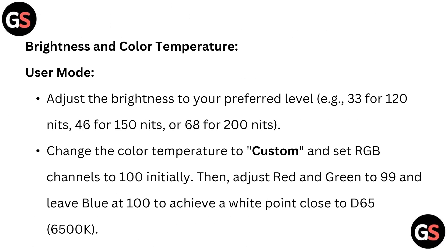In User Mode, adjust the brightness to your preferred level — for example, 33 for 120 nits, 46 for 150 nits, or 68 for 200 nits. Change the Color Temperature to Custom and set the RGB channels to 100 initially, then adjust red and green to 99 and leave blue at 100 to achieve a white point close to D65 6500K.